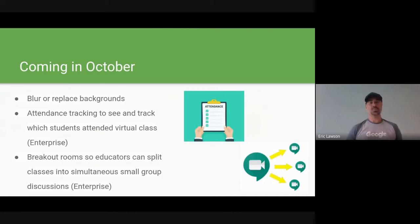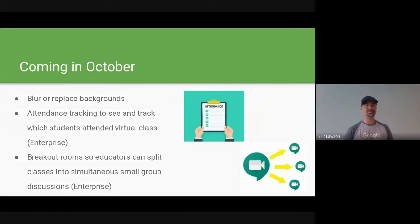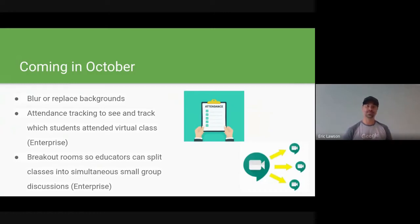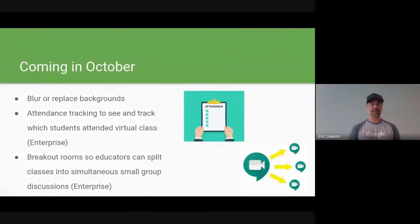In October, you're going to be able to blur backgrounds so you can work from home without worrying about what's behind you. Attendance tracking and breakout rooms will be available for those with enterprise only, so you can run simultaneous small group discussions. If you don't have enterprise, I have a workaround for you as well.